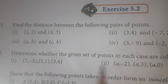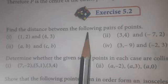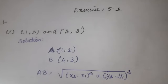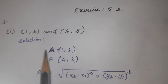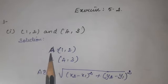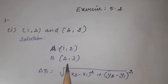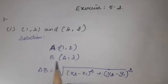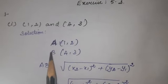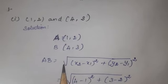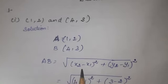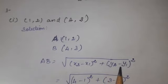Now let us see Exercise 5.2, Question 1: find the distance between the following pairs of points. The first question gives two points: (1, 2) and (4, 3). Solution: the first point is A(1, 2) and the second point is B(4, 3). To find AB, the formula is the square root of (X2 minus X1) whole square plus (Y2 minus Y1) whole square.